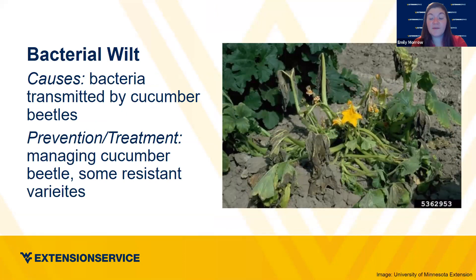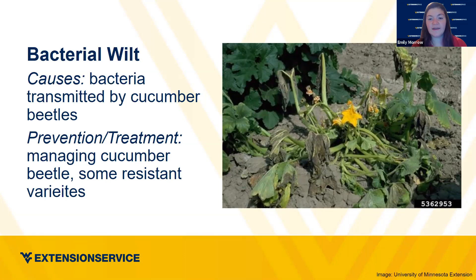Bacterial wilt is common in cucurbits — the cucumber family. This is an example of a disease commonly transmitted by cucumber beetles. Prevention or treatment involves managing the cucumber beetle, which we'll get into in the pest section, and there are some resistant varieties available. Wilt is caused when the plant isn't getting enough water, so it starts to look really sad. This specific disease is present in the cucumber family.